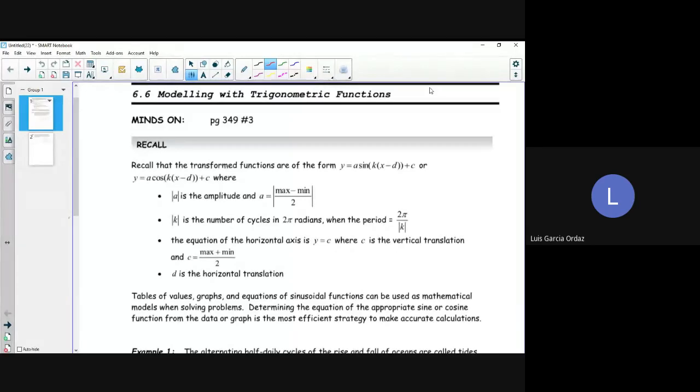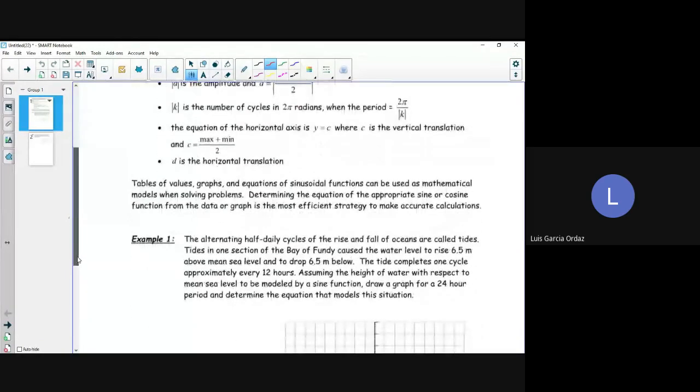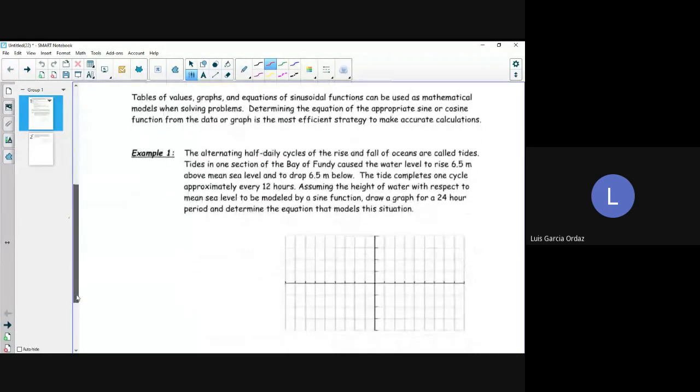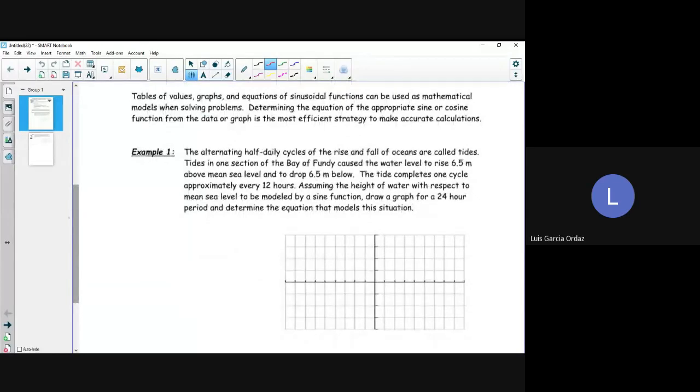To find c, we just do the max plus the min and divide it by 2. So remember, mapping notation is probably the best way to graph a sinusoidal function when looking at a graph.